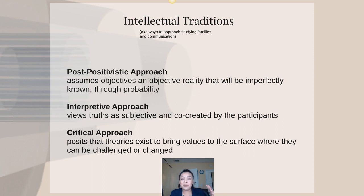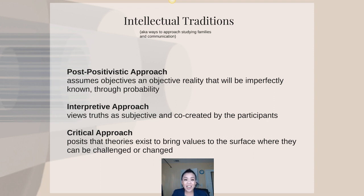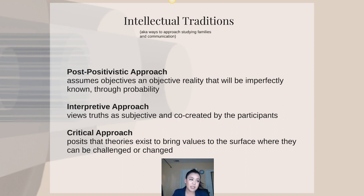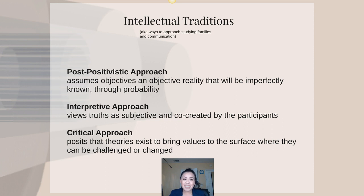Even though these two approaches seem very contradictory, they can be very helpful to one another. A post-positivistic person might find that 50% of families owning two cars go on more vacations and tend to be happier. An interpretivist might then go in, study those families, talk to them one-on-one, and ask if they really are happier. The interpretive approach helps validate and verify the data collected by the post-positivistic scientist, despite appearing to contradict it.